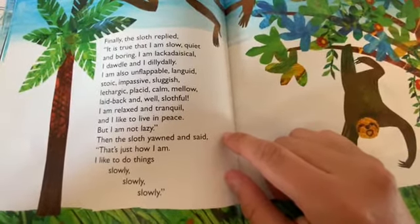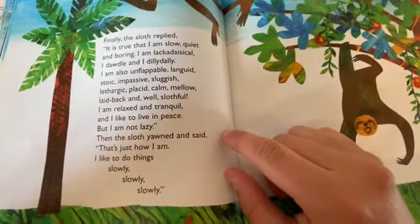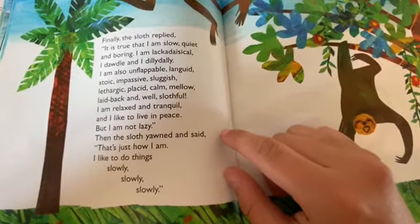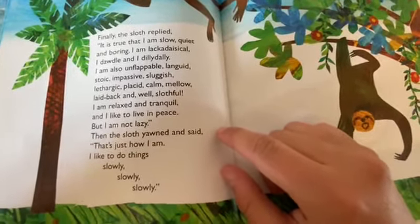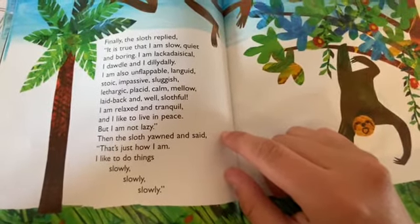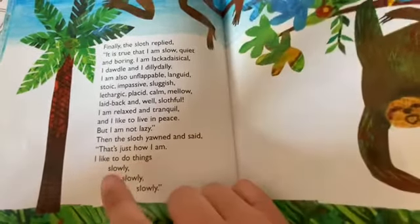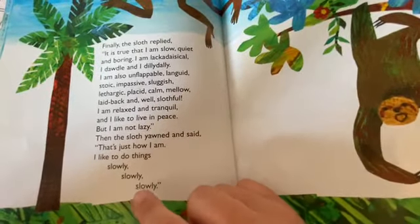I am relaxed and tranquil, and I like to live in peace, but I am not lazy. Then the sloth yawned and said, that's just how I am. I like to do things slowly, slowly, slowly.